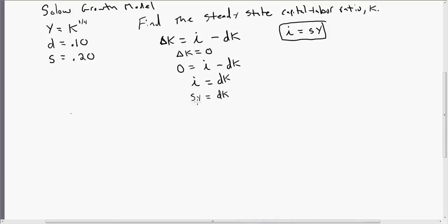So we've got four things here, and we're trying to solve for K. And we'll be able to do that. All we need to do now is make some substitutions. S is 0.2. Okay, that was given to us, so S is 0.2. Y, in this problem, is K to the 1 fourth. D, depreciation, is 0.1. And that's going to be multiplied by K. So all we need to do now is solve this for K.